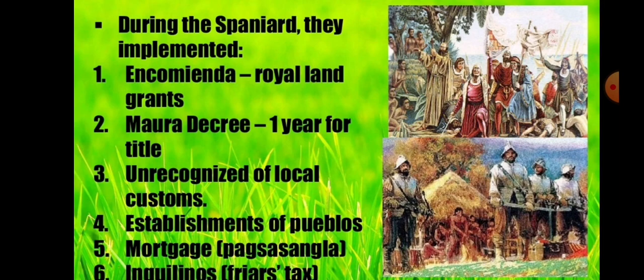During the Spanish period, they implemented: first, the Encomienda or Royal Land Grants, which served as rewards or prizes for conquerors who successfully colonized our country. Second, the Mora Decree or One Year for Title. Third, Non-recognition of Local Customs. Fourth, Establishment of Pueblos. Fifth, Mortgage or Pagsasangla. And sixth, Inquilinos or Friar Estates, which involves the collection of taxes from Filipinos.